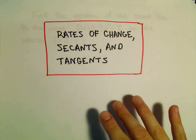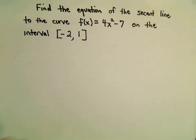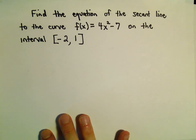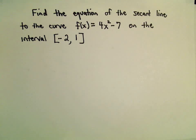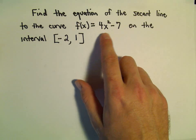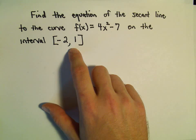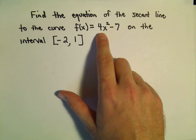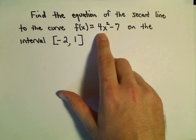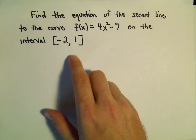Another example here related to rates of change. In this case we're actually going to talk about secant lines a little bit. A secant line is just a line that connects two points on the curve. We want to find the equation for the secant line that sits on the curve f(x) = 4x² - 7 on the interval [-2, 1].